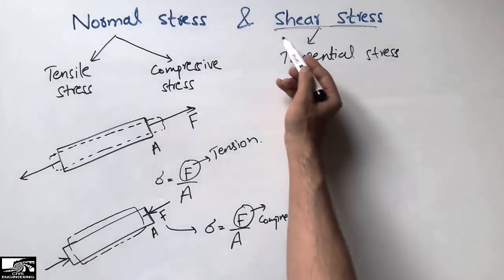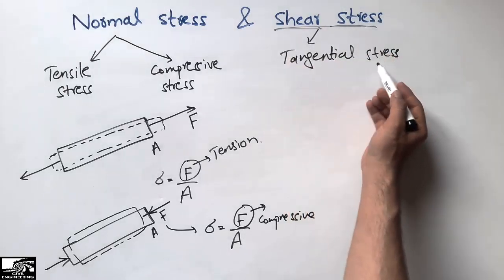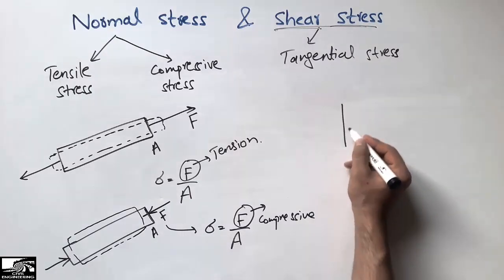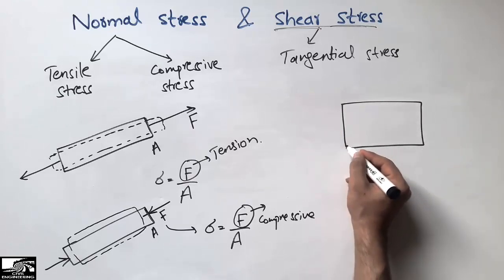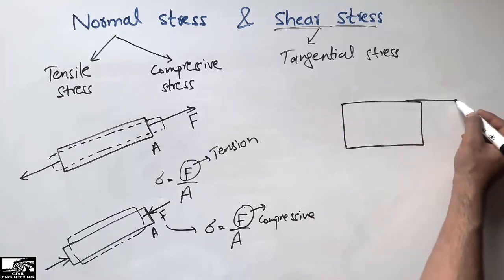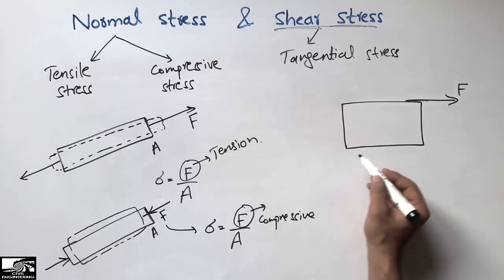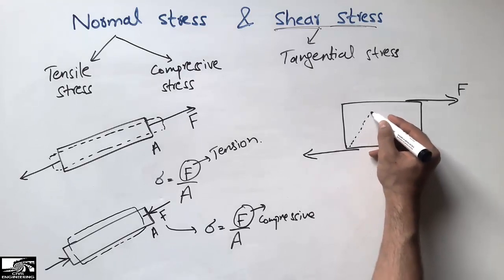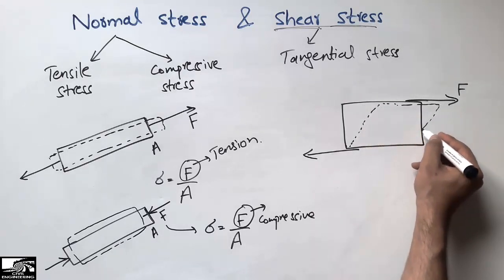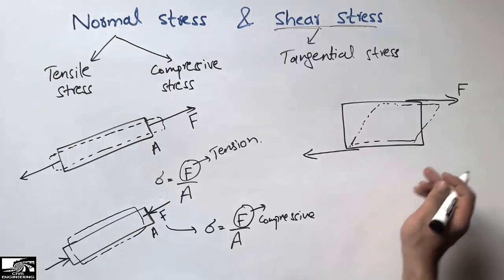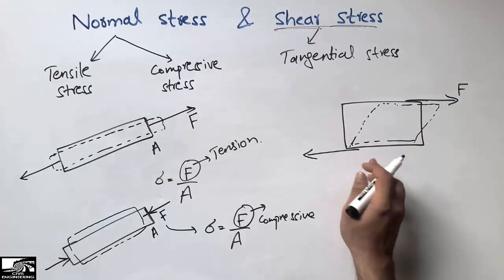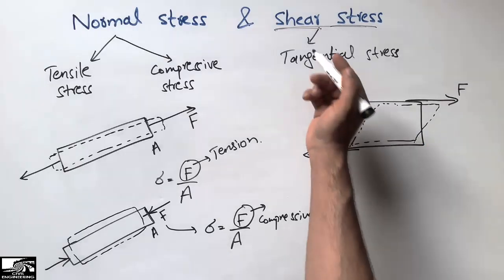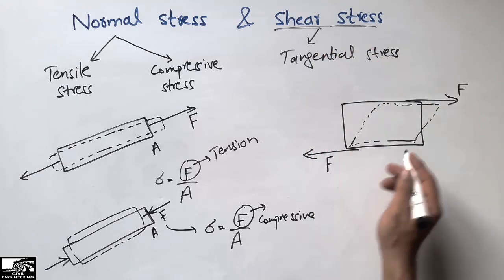The other type of stress is shear stress, sometimes called tangential stress. It is the type of stress in which the body tends to shear. For example, if I consider a member and apply force F in this direction, it will shear the body — the force tends to slide the body in the shear direction.